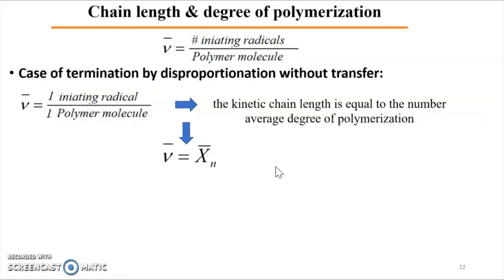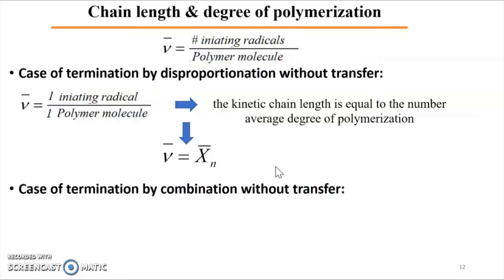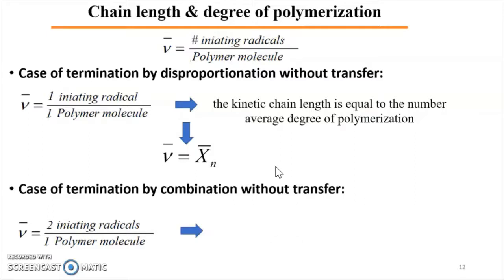If termination occurs by combination, also without transfer, then each polymer molecule is formed from two propagating active chains that combine together. The length of the final chain equals the length of the first propagating chain plus the length of the second propagating chain. Therefore, the degree of polymerization is equal to two times the kinetic chain length: Xn = 2·nu.